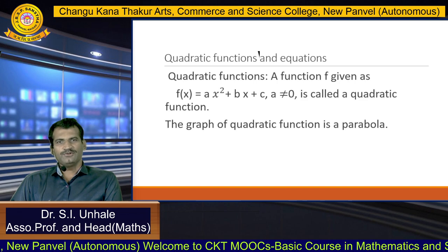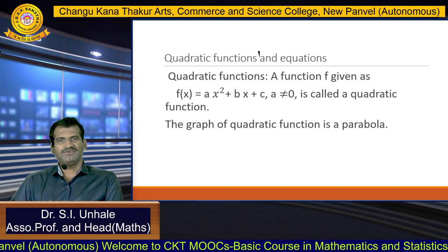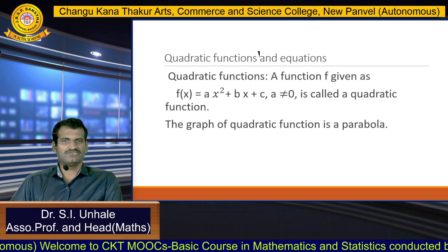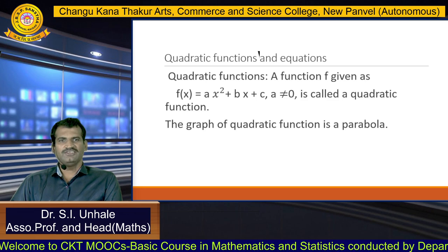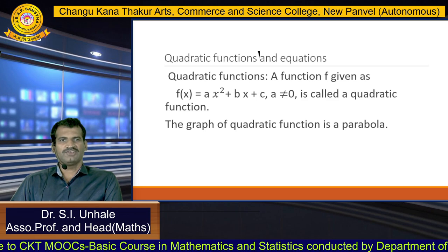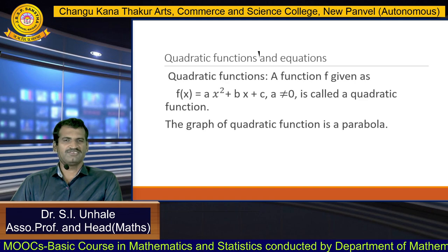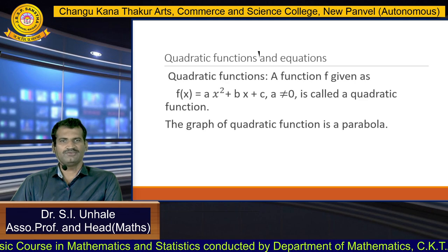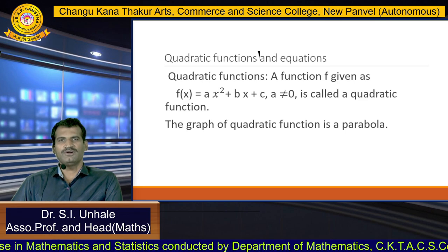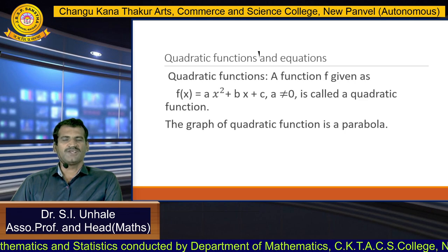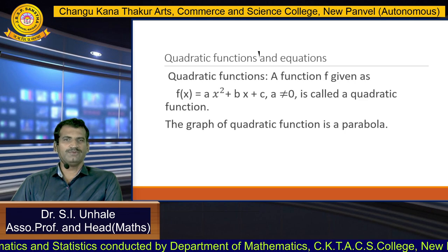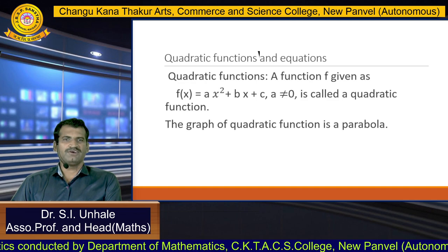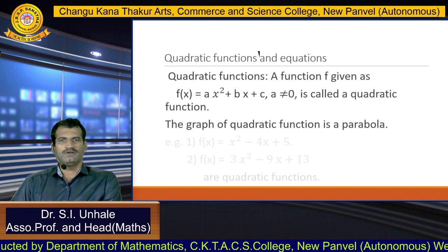We will continue the functions. The next type of function is the quadratic function and quadratic equations. A quadratic function is defined as a function f of x in the form f(x) = ax² + bx + c, where a is not equal to 0. The highest power of the variable x is 2, and the graph of the quadratic function is a parabola.